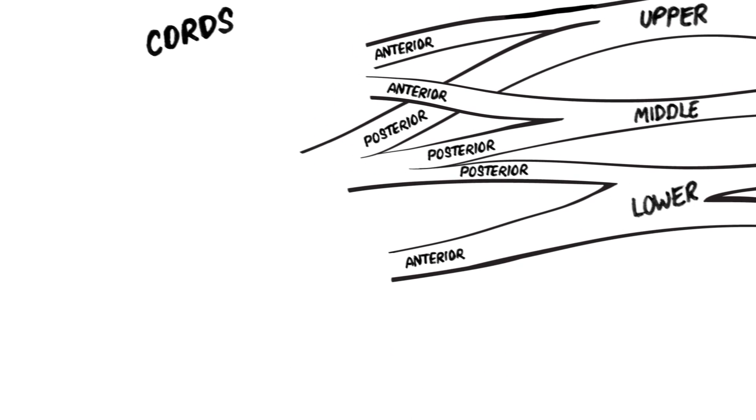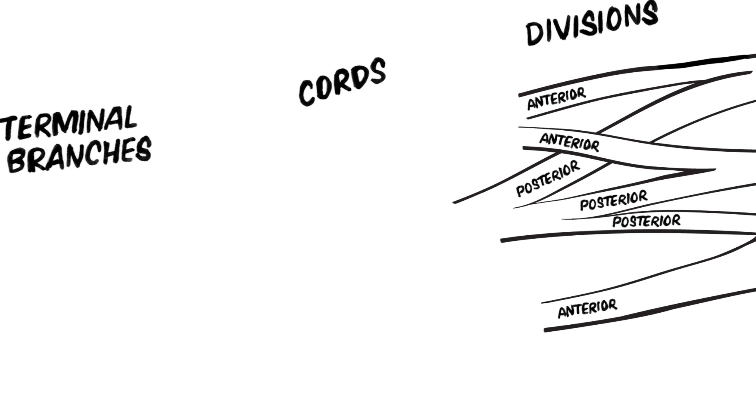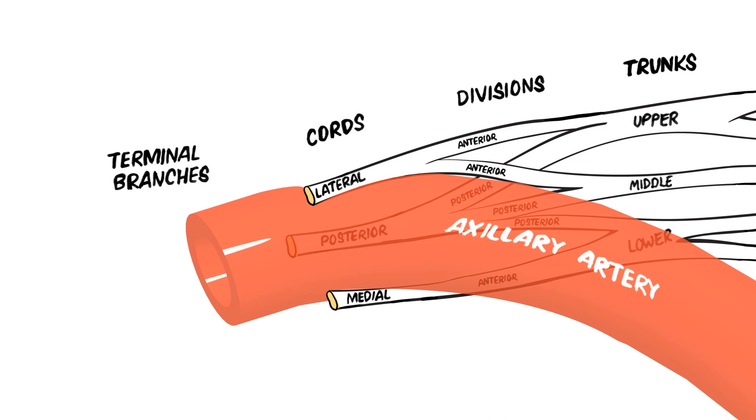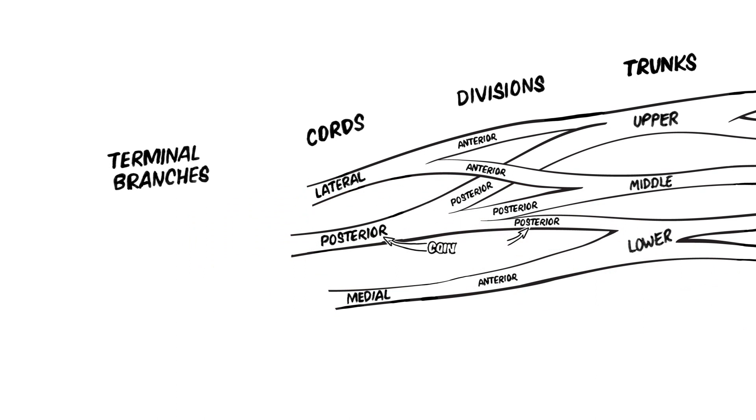Returning to the brachial plexus, we can see that the posterior divisions of each of the three trunks join together to form the posterior cord. The anterior division of the upper trunk and the anterior division of the middle trunk join together to form the lateral cord. Finally, the anterior division of the lower trunk continues by itself to form the medial cord. Note that these cords—medial, lateral, and posterior—are named according to their position relative to the axillary artery. In the anatomical position, the medial cord lies medial to the artery, the lateral cord lies lateral to the artery, and the posterior cord lies posterior to the artery.